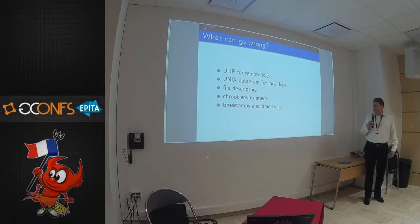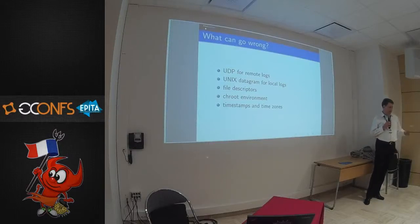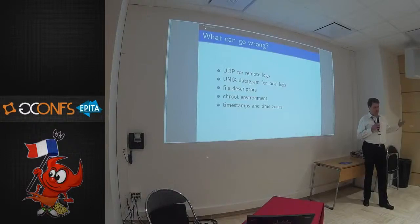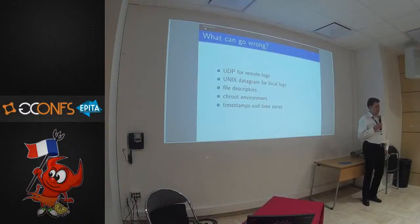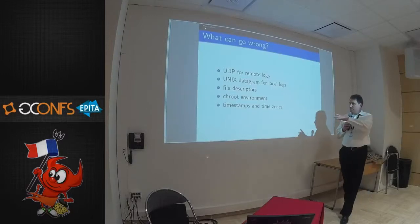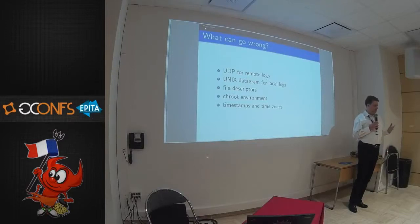Then we have Unix datagram sockets for local delivery. Then you need file descriptors. You need access to the file. You can run chrooted, then you don't see it anymore. And there are timestamps and time zones. When you run chrooted, classical syslog takes the time zone from the local file system. So when you forget to put your /etc/localtime in your chroot environment, you get syslog messages in different time zones — some UTC, some local time. And timestamps are also a problem when you do remote logging in a global environment where every syslog logs in local time and then you have a common log file with different timestamps that's really hard to debug.